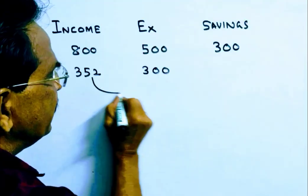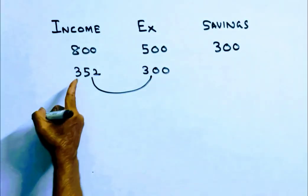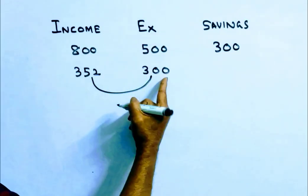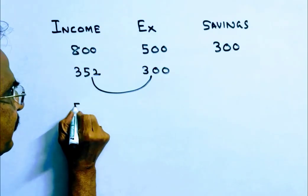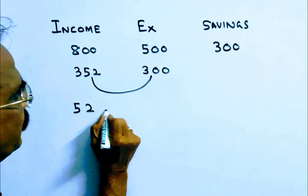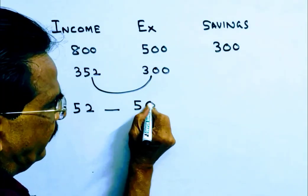So his savings are increased by 52. Friends, if the increase in savings is 52, his expenditure is 500.